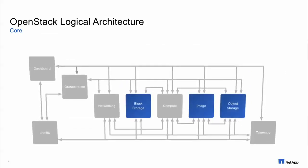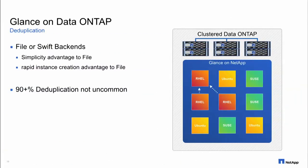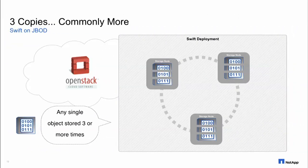Let's talk about Glance. When you back-end it on NetApp systems, you get to take advantage of deduplication. Since we are talking about OS bits, deduplication tends to be very aggressive — 90-plus percent is not uncommon. You could use either the object or file back-end, but from a simplicity perspective the file back-end tends to be the path of least resistance. For object storage, we have an interesting reference architecture on our E Series platform, which possesses a node-level erasure coding capability — an alternative implementation of the CRUSH algorithm.